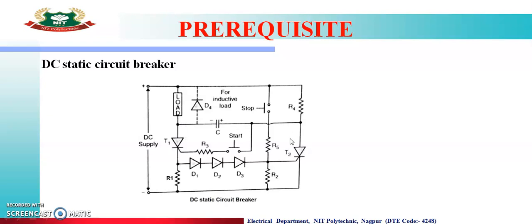As soon as T2 turns ON, it turns OFF T1 by applying reverse capacitor voltage across it. If T1 turns OFF, the load current that was flowing gets interrupted — the circuit breaks. In this way, by manually pressing the push button, we can make and break the circuit.